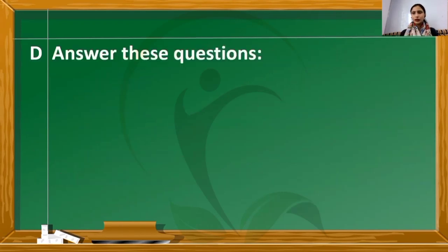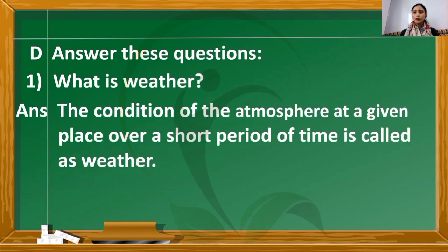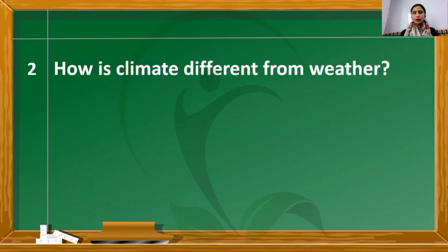Question D — answer these questions. First question: what is weather? The condition of the atmosphere at a given place over a short period of time is called weather. Second question: how is climate different from weather? Weather is the condition of the atmosphere over a short period of time, whereas the climate of a place is the average weather conditions over a long period of time.